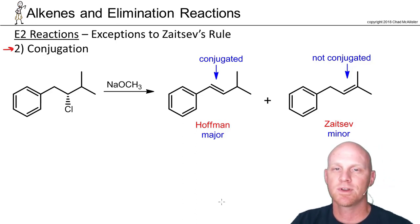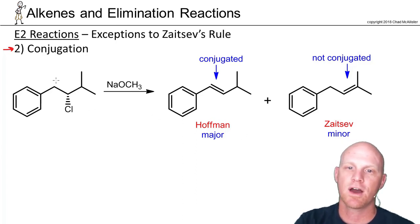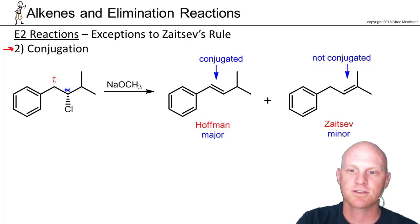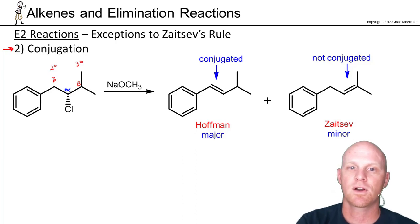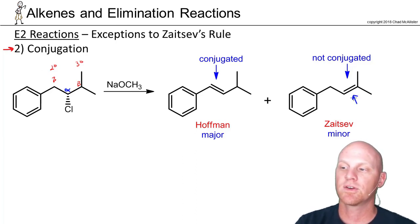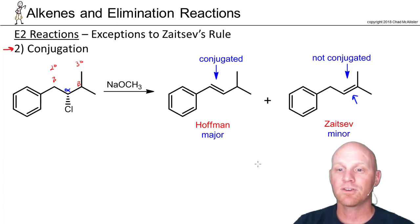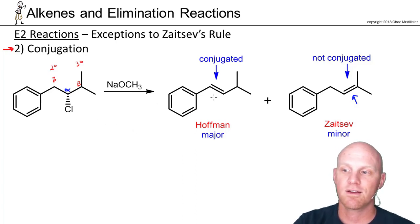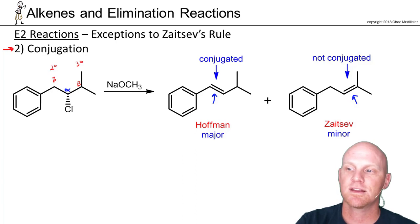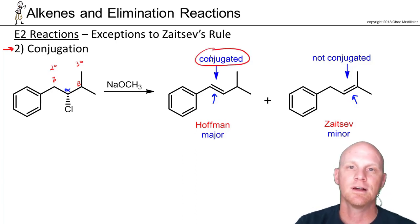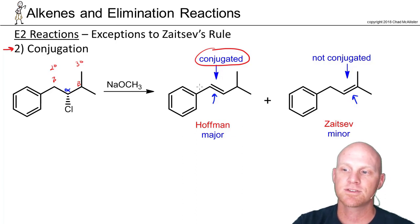In this example, our alpha carbon has the leaving group and two adjacent beta carbons — the one on the right is tertiary, the one on the left is secondary. Zaitsev would say use the tertiary one, and that would give the more substituted alkene. But in this case the more substituted alkene is actually not the more stable alkene. If we use the secondary beta carbon on the left instead, we get a pi bond that forms what we call a conjugated system.